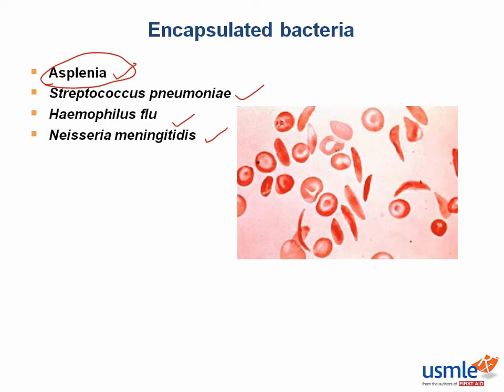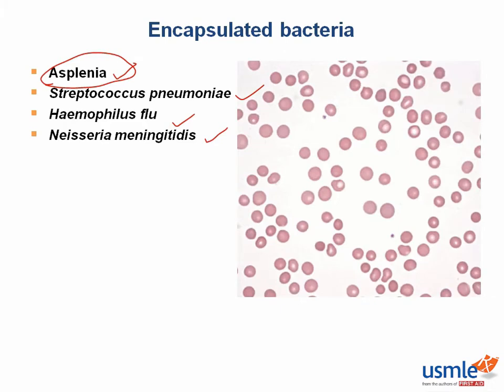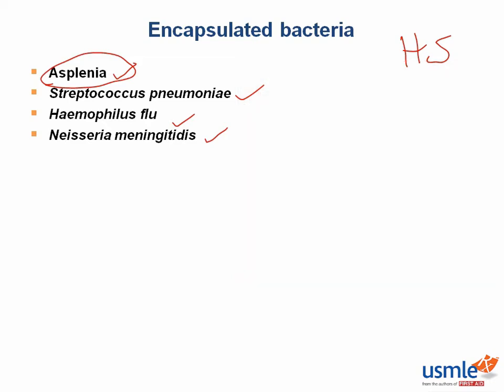What is the other red blood cell disorder commonly treated with splenectomy? Hereditary spherocytosis. In hereditary spherocytosis, the spherocyte gets destroyed in the spleen, so the only way to prevent this is to remove the spleen. Now we have an explanation of why someone might not have a spleen, and in those cases we need to vaccinate the individual to protect them from these severe infections.